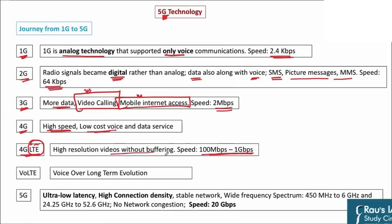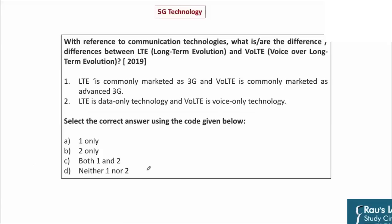When Reliance launched Jio, another service called VoLTE — Voice Over LTE — was introduced. In regular 4G LTE, if you were on a voice call, your internet service would drop back to 3G. But with Voice over LTE, meaning VoLTE, even while on a voice call your LTE service still works. So you can talk to someone and simultaneously use 4G internet. That is VoLTE — voice over long-term evolution.